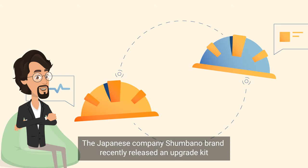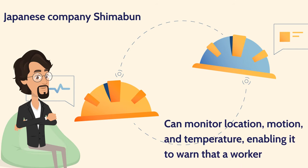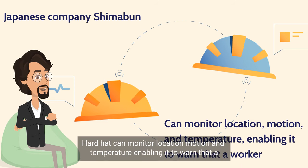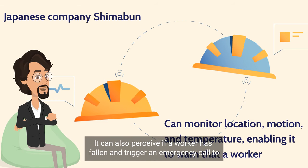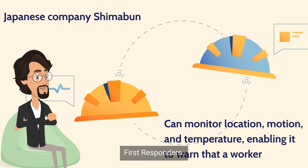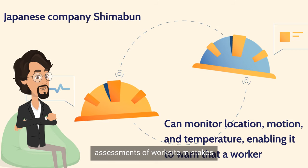The Japanese company Shimabun recently released an upgrade kit that can be used to outfit standard hard hats with a range of advanced safety capabilities. The hard hat can monitor location, motion, and temperature, enabling it to warn that a worker might be light-headed or overheated. It can also detect if a worker has fallen and trigger an emergency call to first responders. The data collected also makes it possible to perform better assessments of worksite mistakes to prevent repeat occurrences.